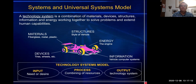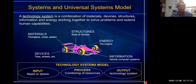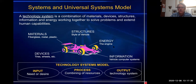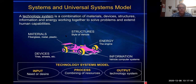A technology system is a combination of materials, devices, structures, information, and energy working together to solve problems and extend human capabilities. Materials like fiberglass, metal, and plastic; structures — style of the vehicle; energy — the engine or gasoline for the engine; information — vehicle computer systems; devices — tires, wheels, etc. These are all part of a technological system. The technology systems model: input is a need or desire.